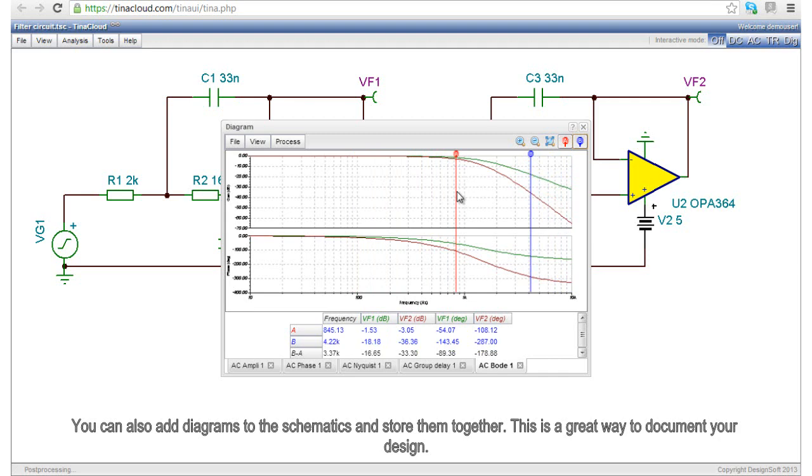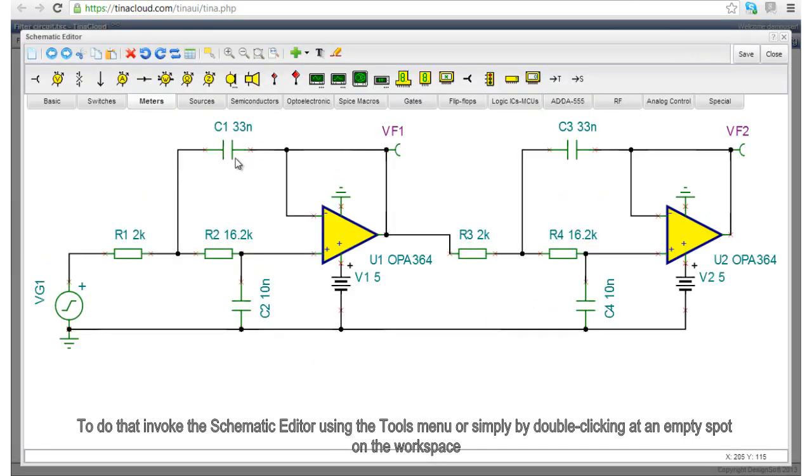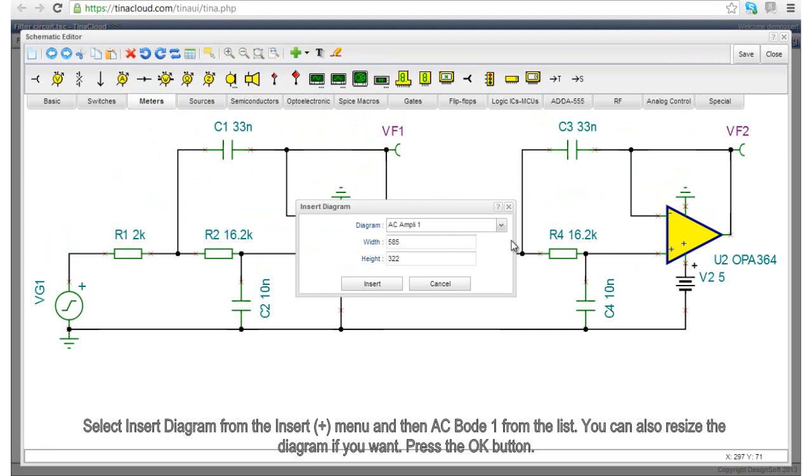You can also add diagrams to the schematics and store them together. This is a great way to document your design. To do that, invoke the schematic editor using the Tools menu or simply by double-clicking at an empty spot on the workspace. Select Insert Diagram from the Insert menu, denoted by a plus symbol, and then select AC Bode 1 from the list. You can also resize the diagram if you want. Press the OK button.